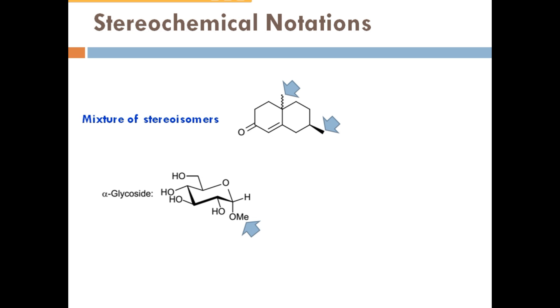Alpha glucoside. Alpha means the first carbon in the six-member ring. If the group is attached vertically, this means alpha. If this group is horizontally, this is beta glycoside.